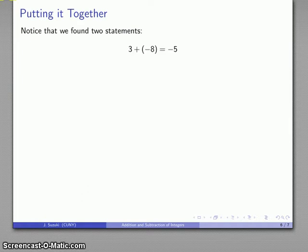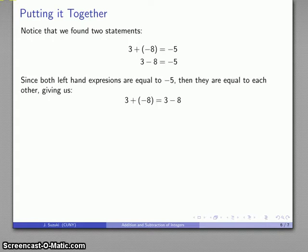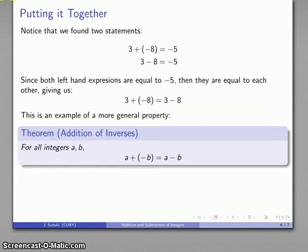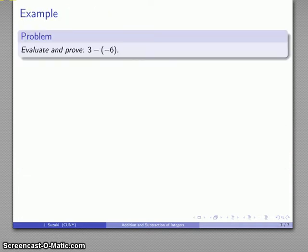Notice that the last two examples gave us two statements: 3 plus negative 8 equals negative 5, and 3 minus 8 equals negative 5. Both of these are equal to negative 5. If they're both equal to negative 5, they must be equal to each other, so that tells me 3 plus negative 8 must be the same thing as 3 minus 8. This is an example of a more general property of the integers: anytime I add the additive inverse, it's the same as subtracting the number.